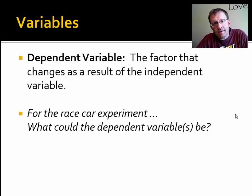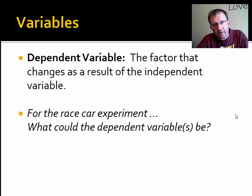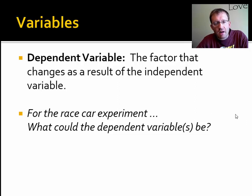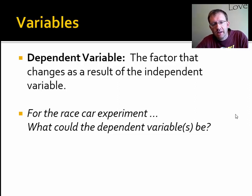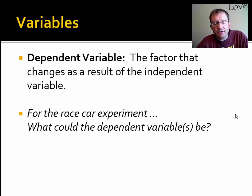That 'somewhere else' is the dependent variable. A dependent variable is what's changing as a result of what you were adjusting. There may be more than one in an experiment — you may collect data on more than one dependent variable and draw conclusions about more than one. Or you may focus your attention on just one. As mentioned previously, it's always better to collect more data than you think you'll need, because later you might find a whole different relationship. So it's probably better to collect a lot of data, even if it means having two, three, or four dependent variables.